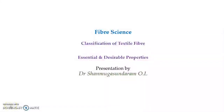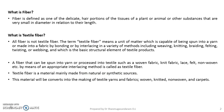Dear learners, a warm welcome to the video lecture on Classification of Textile Fibers, Essential and Desirable Properties of Textile Fibers. Fiber is defined as one of the delicate material and hair portion of the tissue of a plant or animal or other substance that are very small in diameter in relation to their length. The length to breadth ratio is minimum 1000 to 1 for it to be called a fiber.